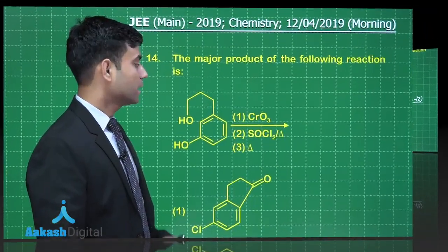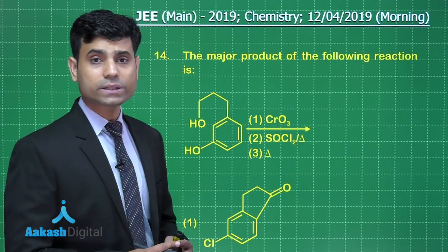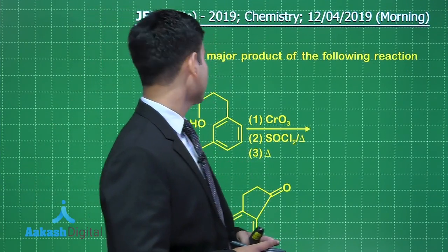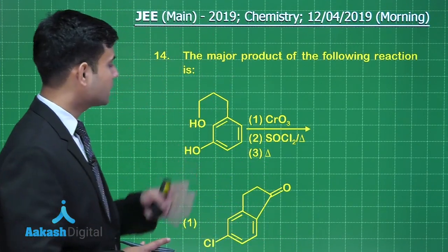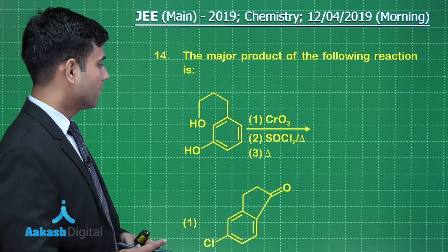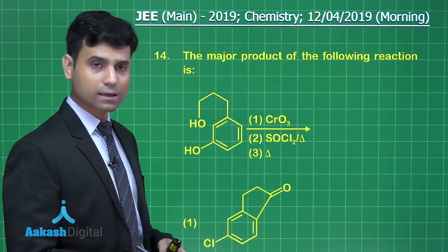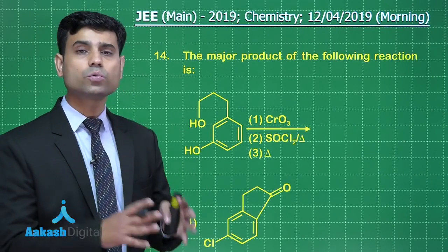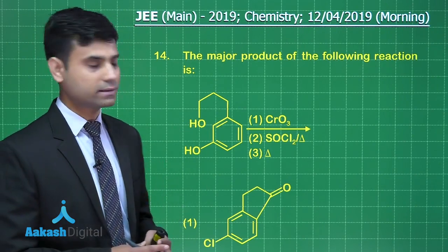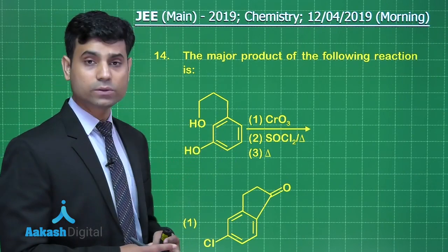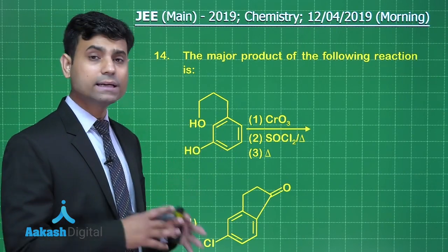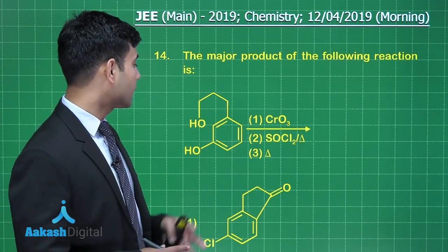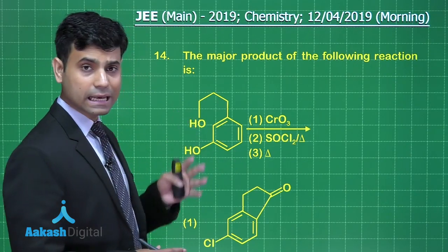This is the next question. It says: the major product of the following reaction is. First, the compound reacts with CrO₃, so oxidation of the OH group will take place to give a carboxylic acid. Then we have SOCl₂ and the mixture is heated, so in the last step we will get an acyl halide.